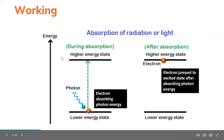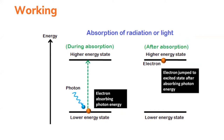Now let's look at the detailed working principle of the laser — this is very important. There are four steps, and I've provided a diagram showing what happens at each stage. The first step is called absorption of radiation or light.